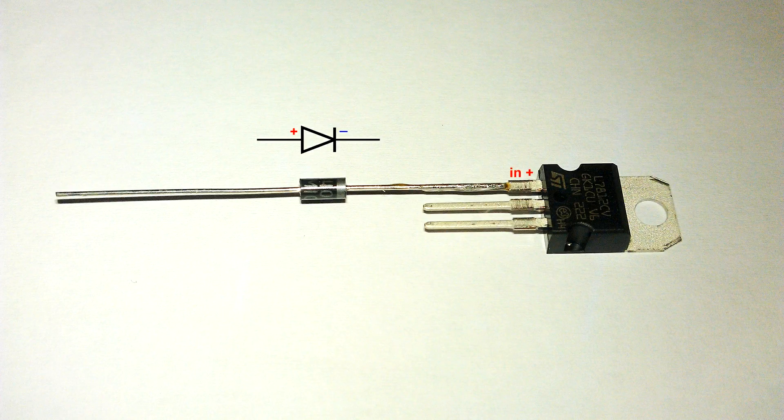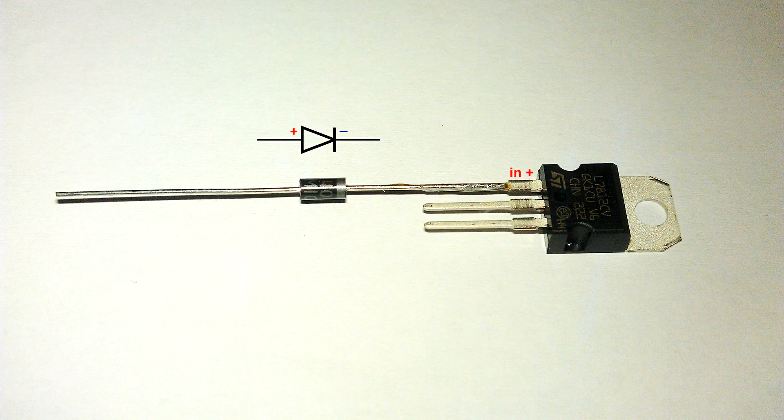Let's start. Solder the negative pin of the diode to the positive input of the stabilizer.